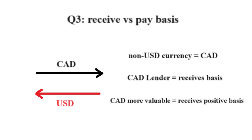Given the assumption that CAD is currently in high demand in the market, the trader who lends out CAD will receive an extra basis on the interest generated from the CAD principal amount. So in this case, the trader receives a positive basis.